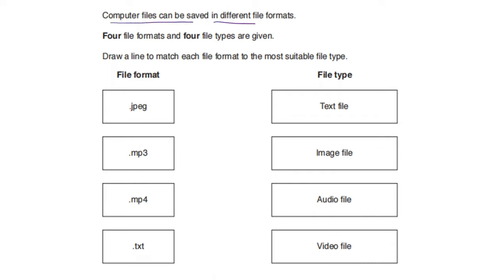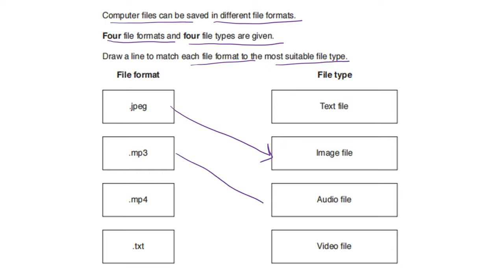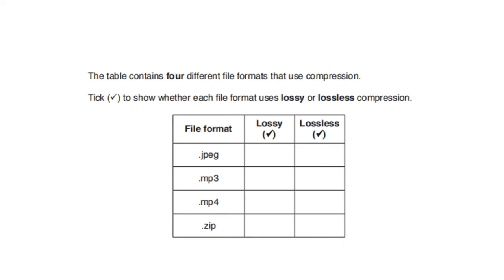Computer files can be saved in different file formats. Draw a line to match each file format to the most suitable file type: JPEG is an image file, MP3 is an audio file, MP4 is a video file, and TXT is a text file. The table also shows four file formats that use compression — tick lossy or lossless: JPEG uses lossy compression, MP3 uses lossy compression, MP4 uses lossy compression, and ZIP uses lossless compression.